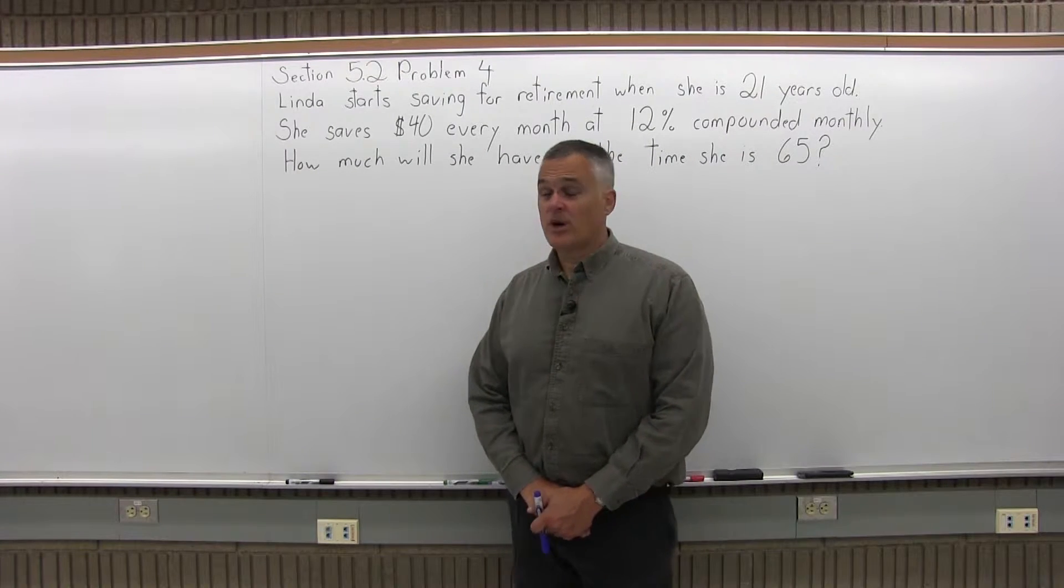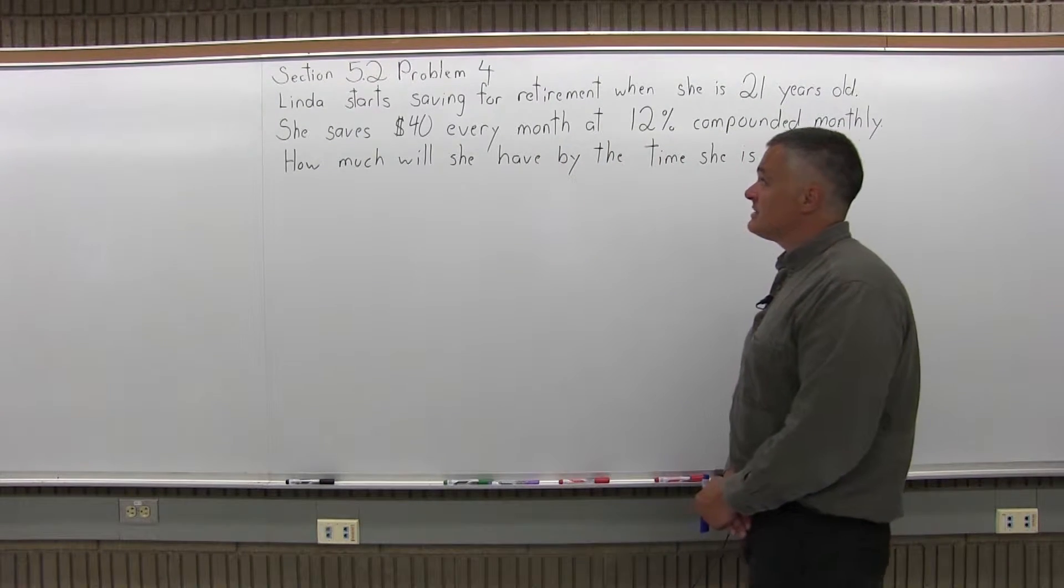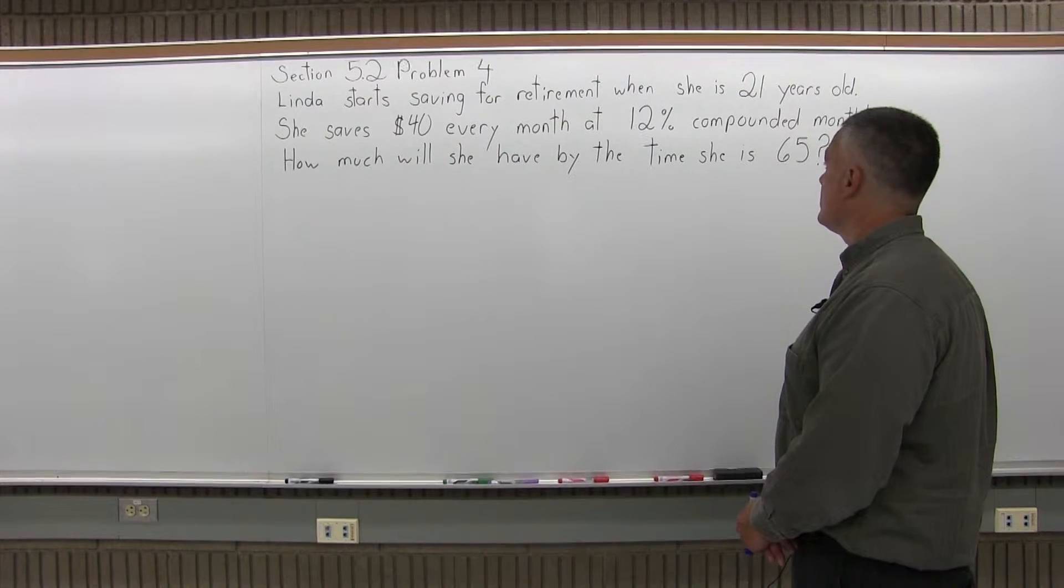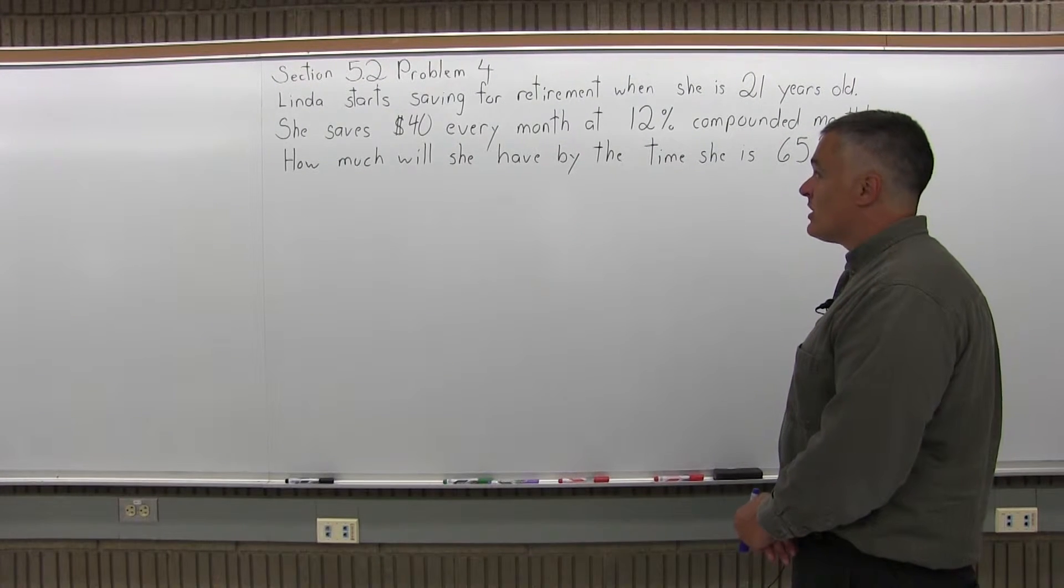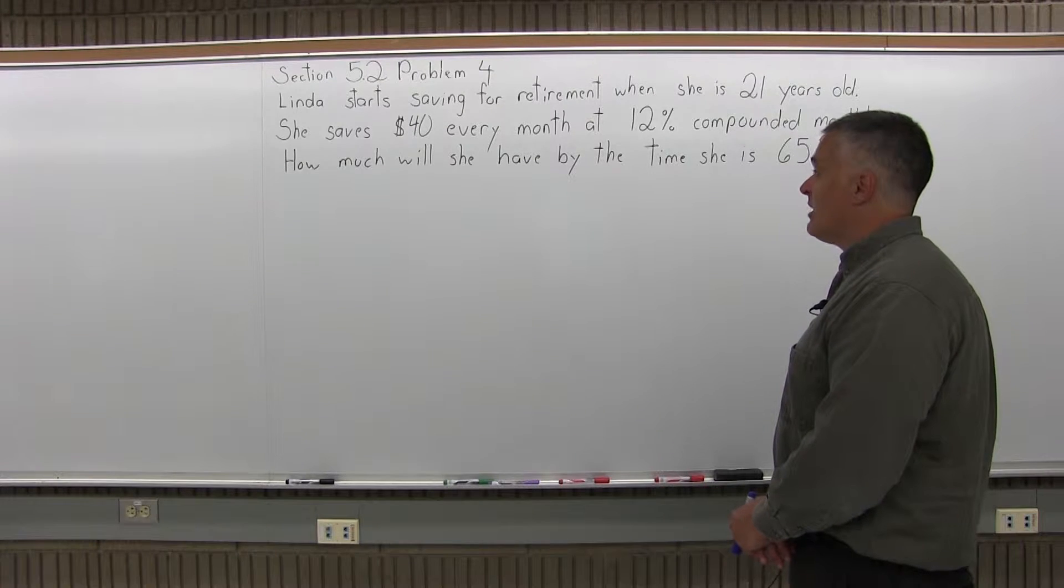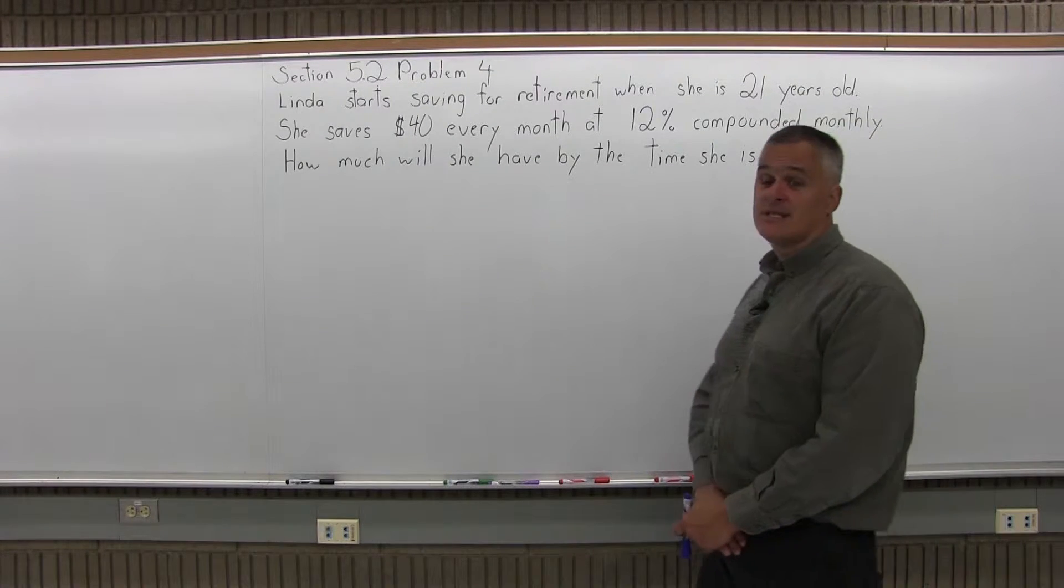This is Section 5.2, Problem 4. Linda started saving for retirement when she was 21 years old. She saves $40 every month at 12% compounded monthly. How much will she have by the time she's 65?